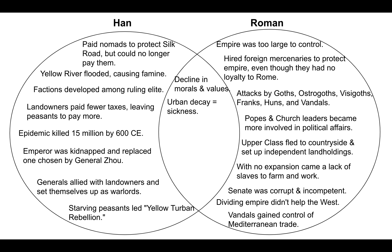In both the Han Dynasty and the western part of the Roman Empire, the cities became overcrowded. There wasn't enough food because the farmers in both were not able to produce enough. In the Han Dynasty, the peasants lost their land and were unable to farm enough, and then there were floods from the Yellow River which destroyed a lot of the crops. In the western part of the Roman Empire, farmers had fled from the countryside because of invaders, so if they're all in the cities they're not out on their farms farming. There's not enough food coming into these urban areas, so there's a lot of poverty, starvation, and sickness.